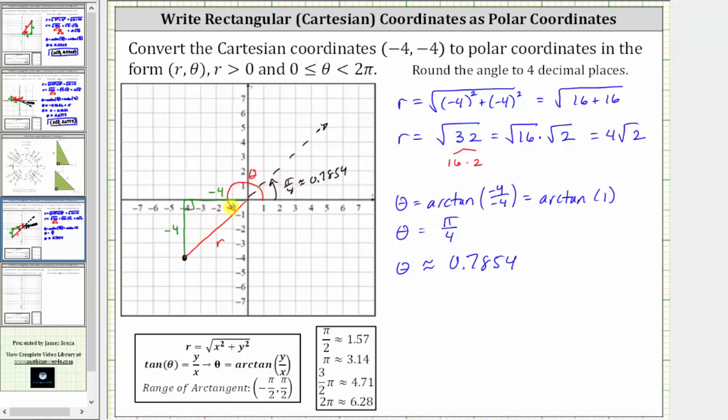So the reference angle for the angle theta we are looking for is pi over four radians, or approximately 0.7854 radians, which means to find the angle theta in the given interval, we need to add pi radians to pi over four radians, or to the approximation.